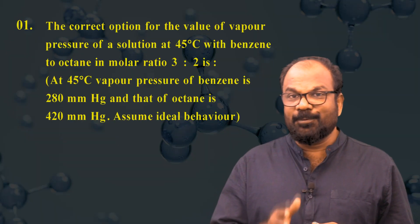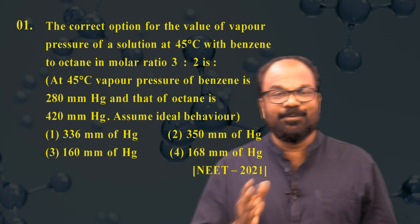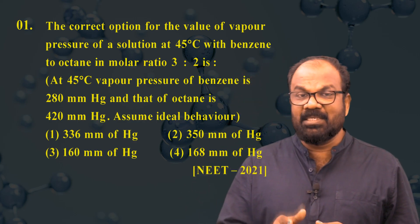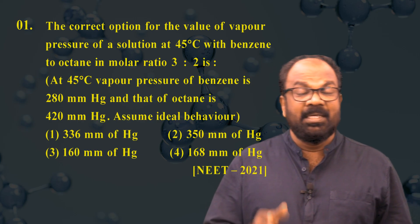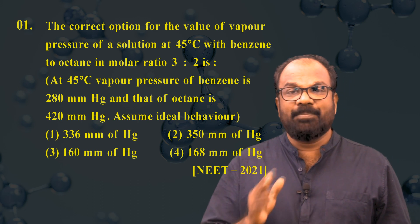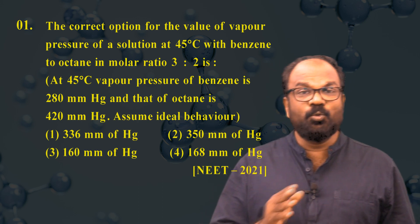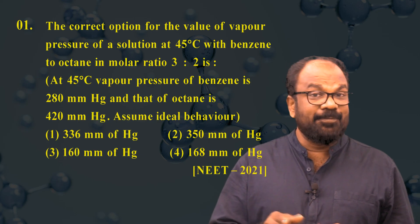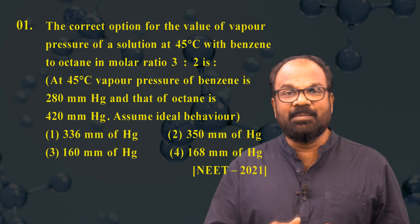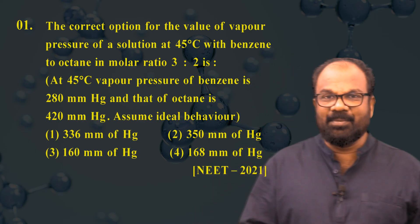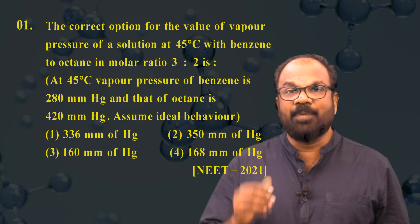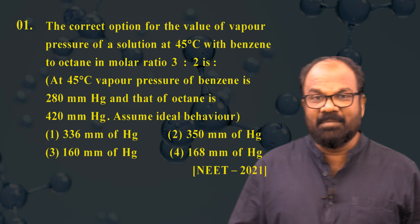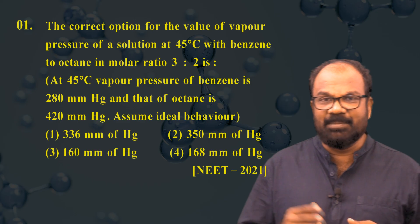Question number one: find the correct option for the value of vapor pressure of a solution at 45 degrees centigrade with benzene to octane in molar ratio 3:2. At 45°C, vapor pressure of benzene is 280 mmHg and that of octane is 420 mmHg. Assume ideal behavior. Options: (1) 336 mmHg, (2) 350 mmHg, (3) 160 mmHg, (4) 168 mmHg.